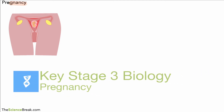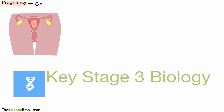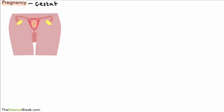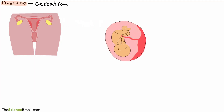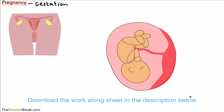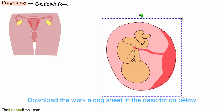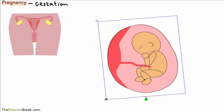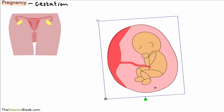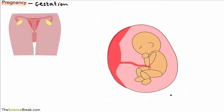Hello, today we're going to take a look at an overview of pregnancy, sometimes referred to as gestation. We're going to take a look at this little developing baby in the uterus here in the diagram. Let's just make it a bit bigger so we can see it, and let's turn it around so it's the right way.